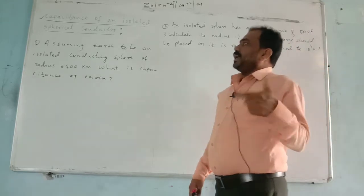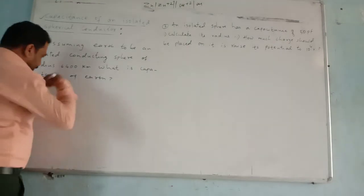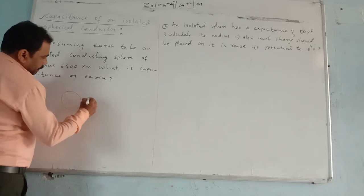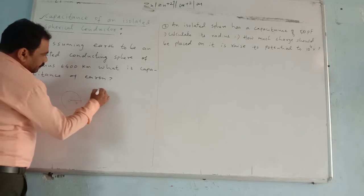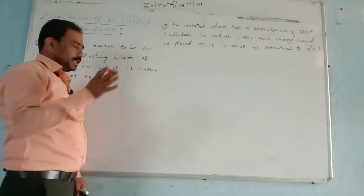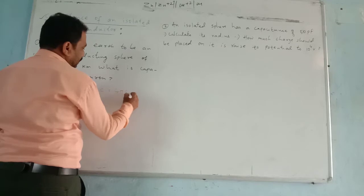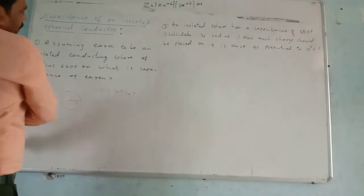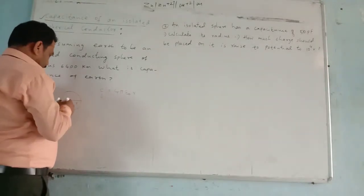So, capacitance of an isolated spherical conductor — the concept is this: suppose this is the spherical conductor and if we want the capacitance of this spherical conductor having radius r, we have a formula. Capacitance of a spherical conductor is exactly equal to 4πε₀ multiplied by r.